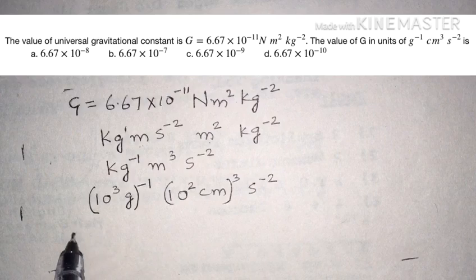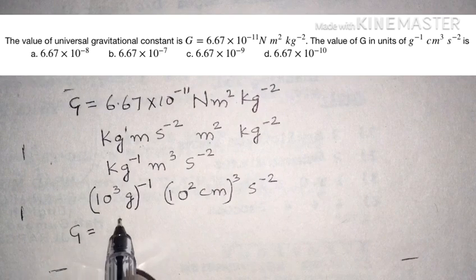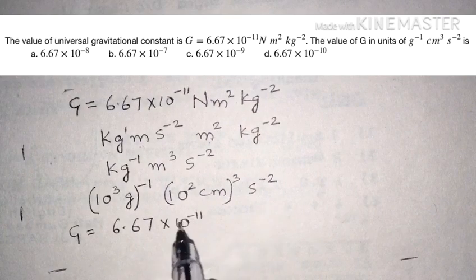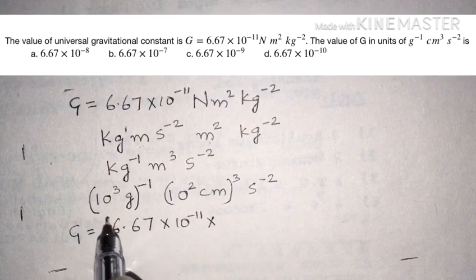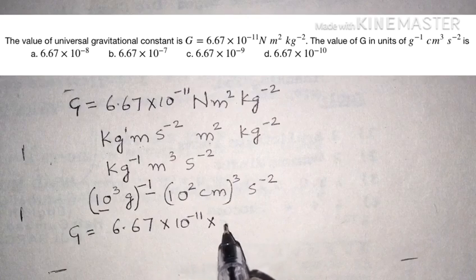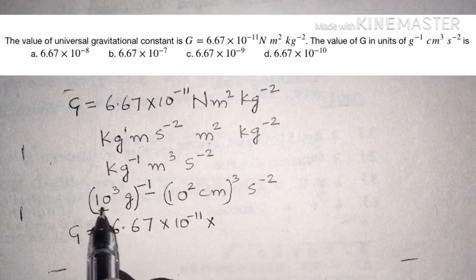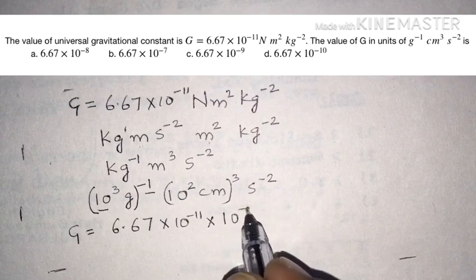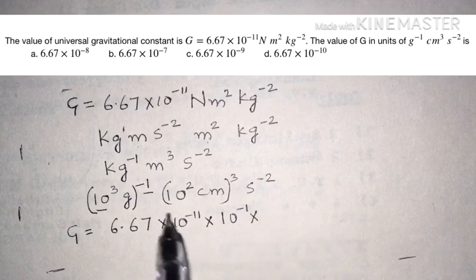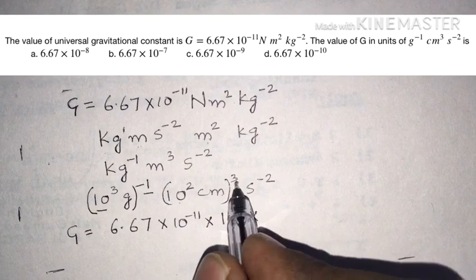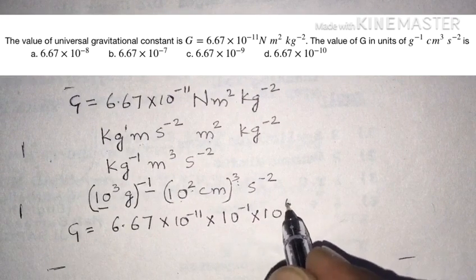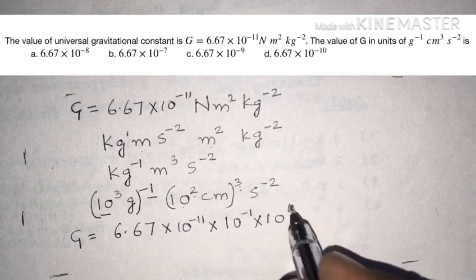The given value G equals 6.67 into 10 power minus 11 is multiplied by 10 power 3 to the power minus 1, giving 10 power minus 3, and then by 10 power 2 to the power 3, giving 10 power 6. There is no multiplier for seconds.